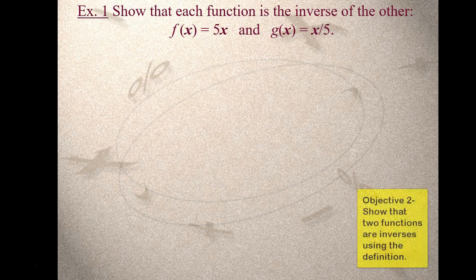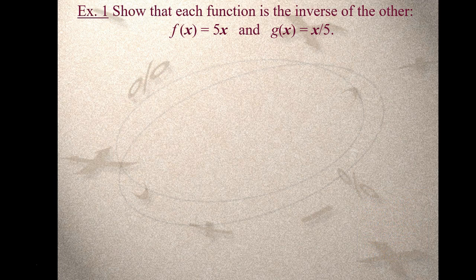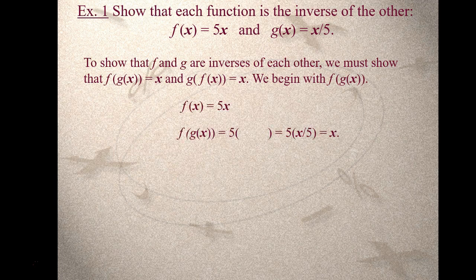So if you were asked to show that two functions are inverses of each other, we're going to apply that definition and see that it holds up. We're going to do f composition g of x and g composition f of x and see what happens. Starting with f composition g of x: f is the outer function, f is 5x. For compositions, wherever the outer function has an x, I replace it with parentheses, and what goes inside those parentheses is the inner function g of x, which is x divided by 5.